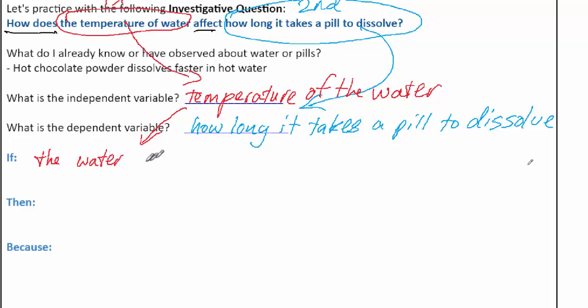Okay. But remember, independent variable comes first, the dependent variable comes second. And this is where we have to remember that the independent variable is what the scientist purposely changes. So we want to decide how we're going to purposely change the water temperature. We can either increase it or we can decrease it.